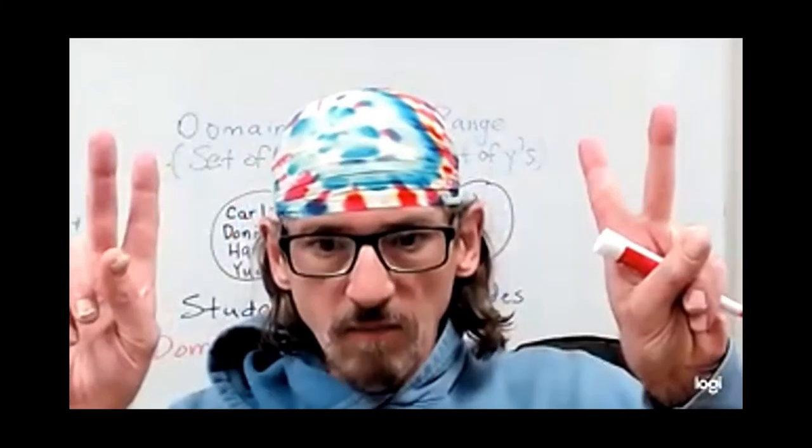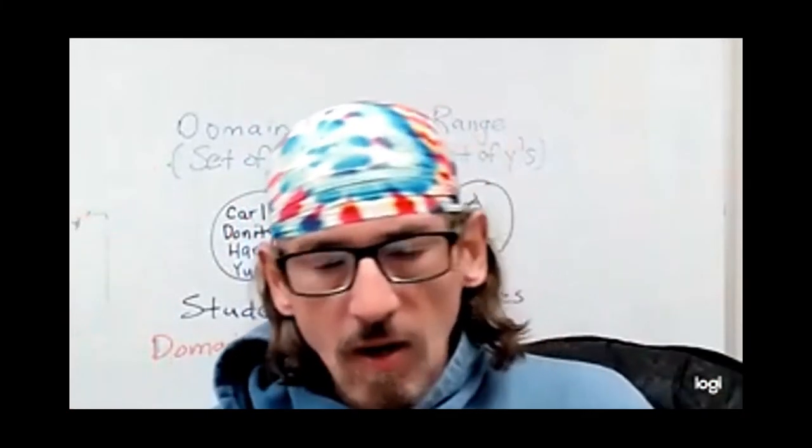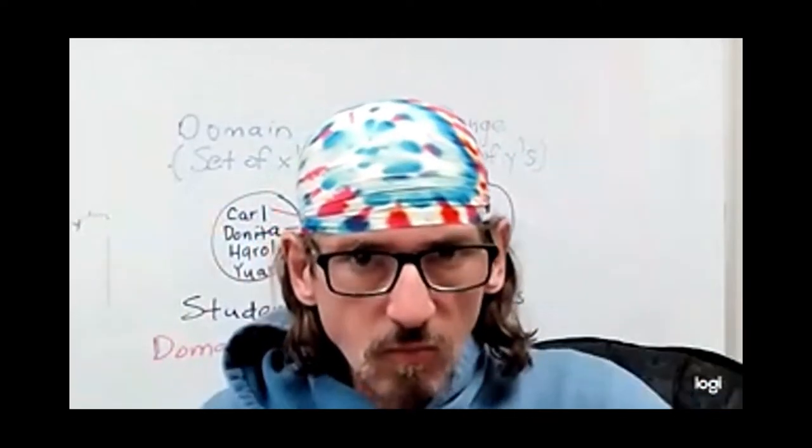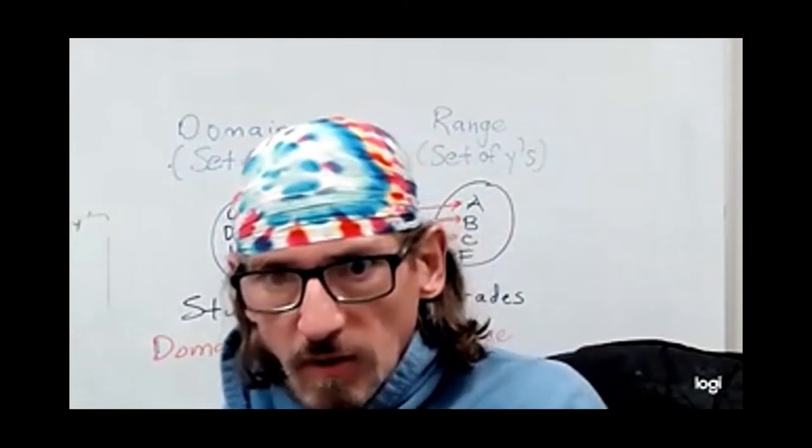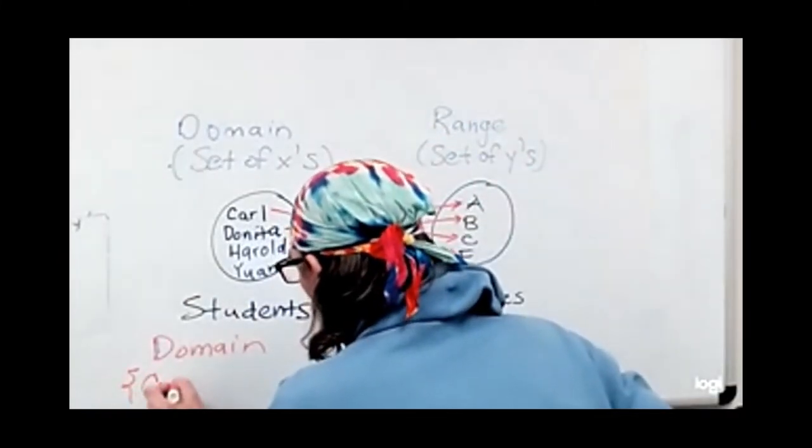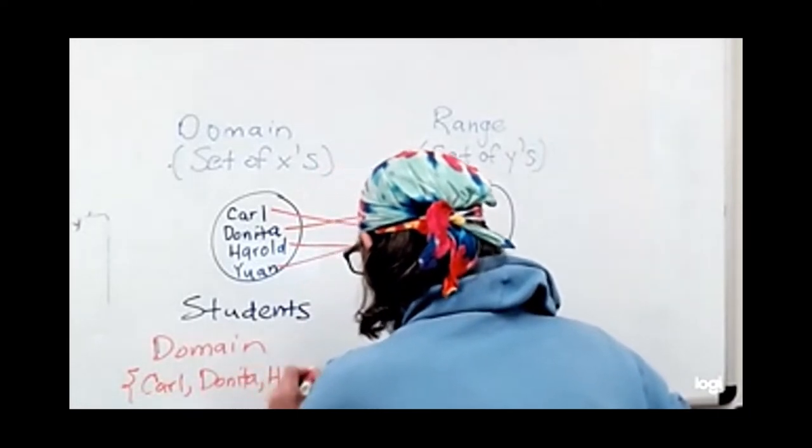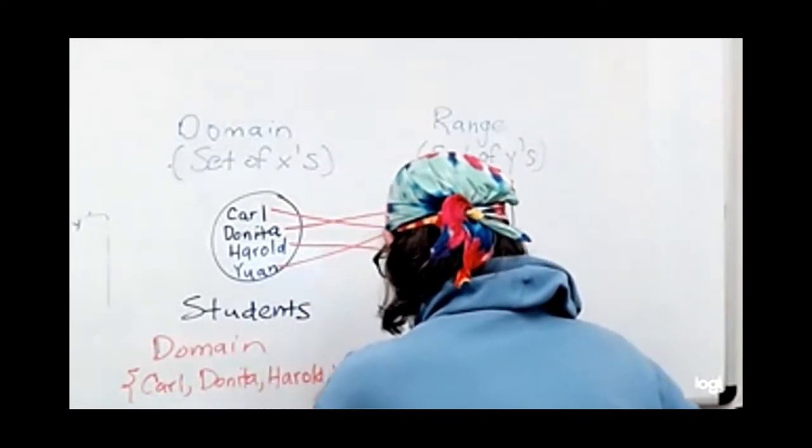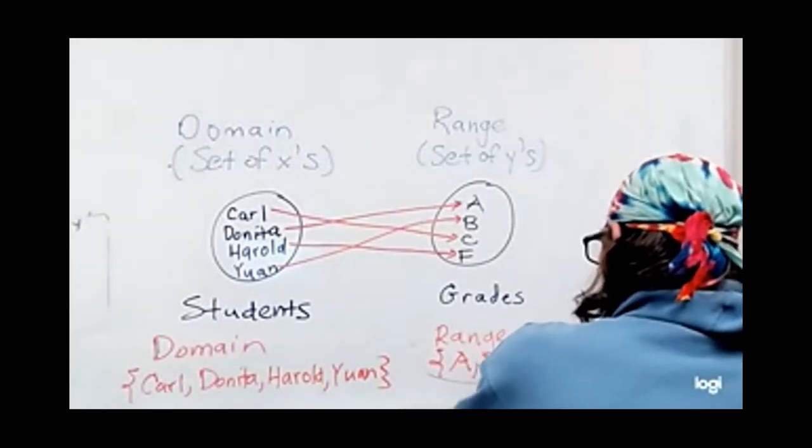Because there are finitely many values, even though I'm not talking about numbers here, still X values and Y values, I use that set builder notation, the curly braces around things, to write the domain range as a roster or a listing. So we've got Carl, Donita, Harold, and Juan as our domain, and our range as A, B, C, and F.